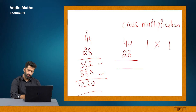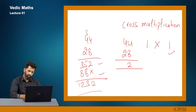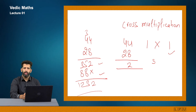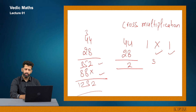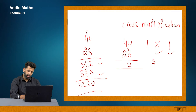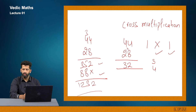In cross multiplication of 44 × 28, step one: 8 into 4 gives me 32. I write 2 down and 3 is my carry forward. Remember, I will only use one digit at a time and the rest will be carried forward. Step two: I multiply in cross manner — 2 into 4 gives 8, plus 8 into 4 gives 32. So 8 plus 32 is 40, plus 3 carry forward gives 43. I write 3 and carry 4.